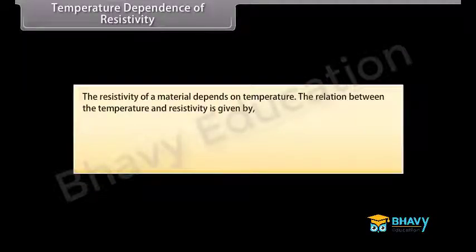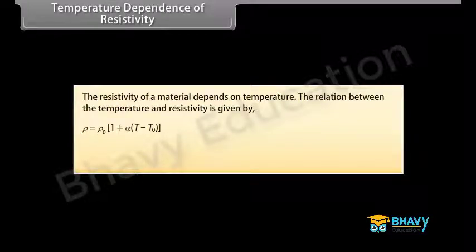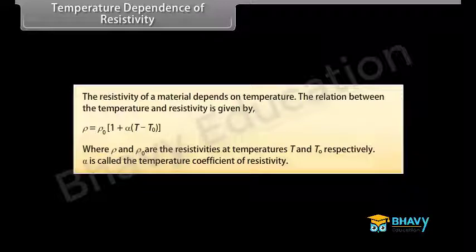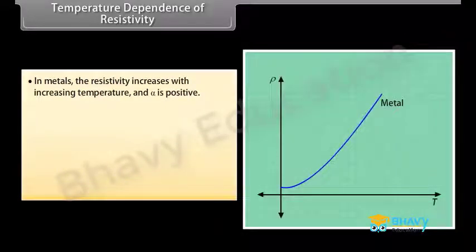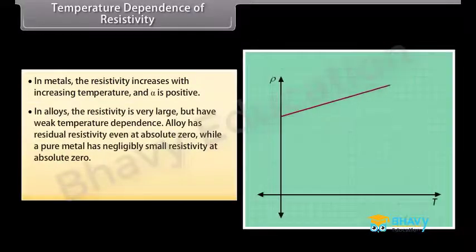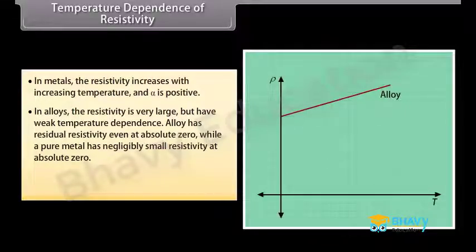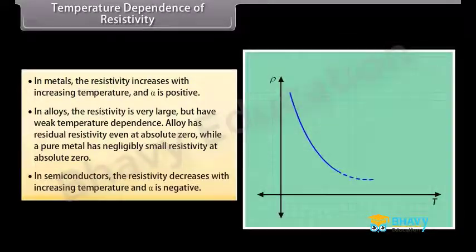The resistivity of a material depends on temperature. The relation is given by rho equals rho-naught multiplied by 1 plus alpha times (T minus T-naught), where rho and rho-naught are the resistivities at temperatures T and T-naught respectively, and alpha is called the temperature coefficient of resistivity. In metals, resistivity increases with increasing temperature and alpha is positive. In alloys, resistivity is very large but has weak temperature dependence, with residual resistivity even at absolute zero. In semiconductors, resistivity decreases with increasing temperature and alpha is negative.